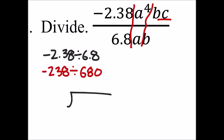You could simplify that at that point. We know it's going to be negative. So 238, we're going to need a decimal there, divided by 680. Because it won't go into 238.